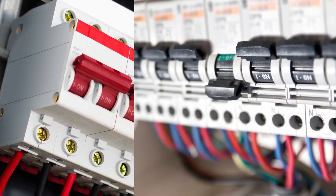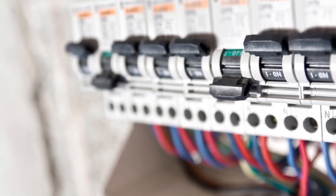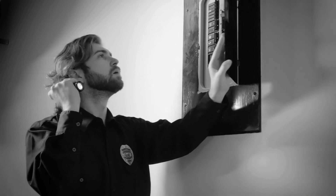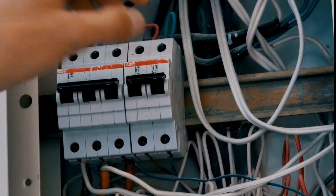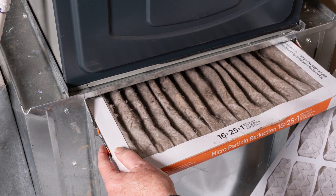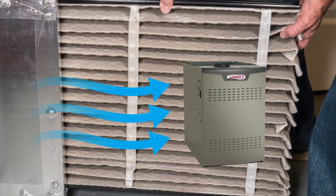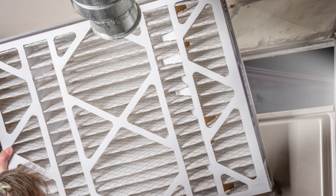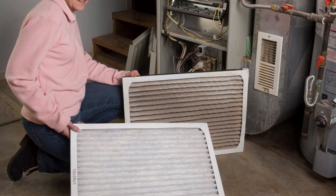Inspect the circuit breaker. Sometimes the circuit breaker can trip, cutting power to the furnace. Locate your home's circuit breaker panel, open the panel, and if you find any tripped breakers, reset them. A brownout can cause a trip. A dirty filter can also trip a circuit breaker — it can restrict airflow in your furnace, therefore triggering the breaker. Hold the filter to the light and check it for dust and debris. If it is dirty, replace it before resetting the breaker.